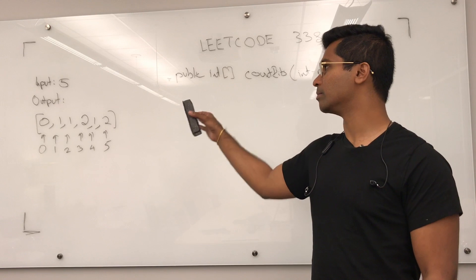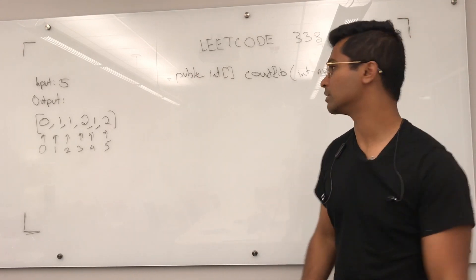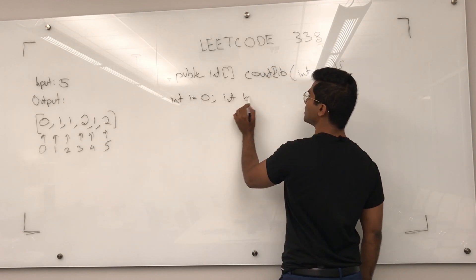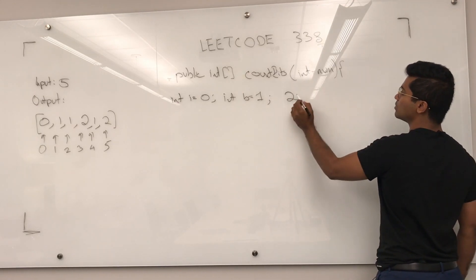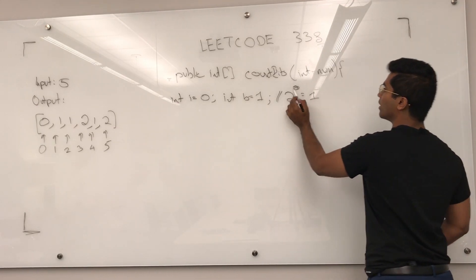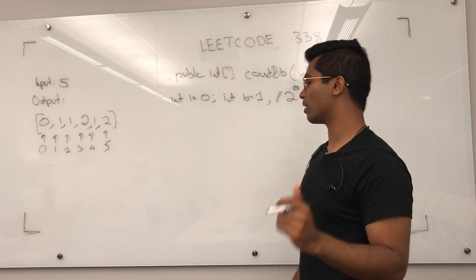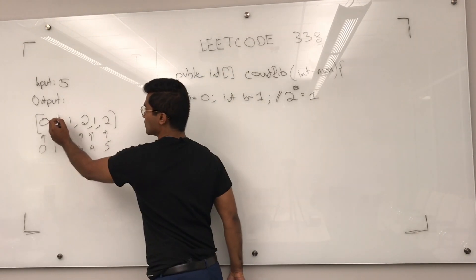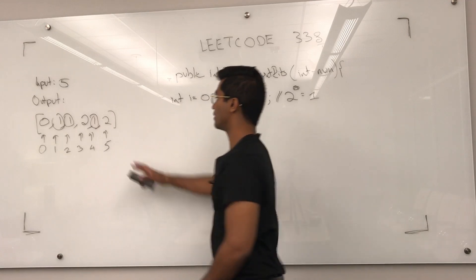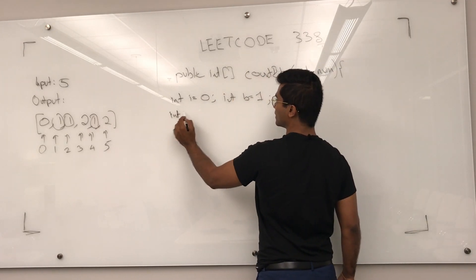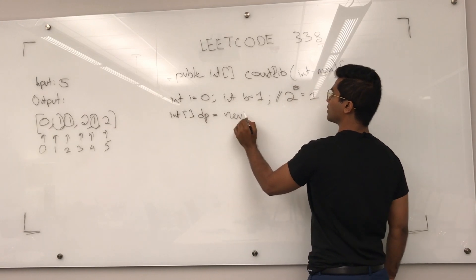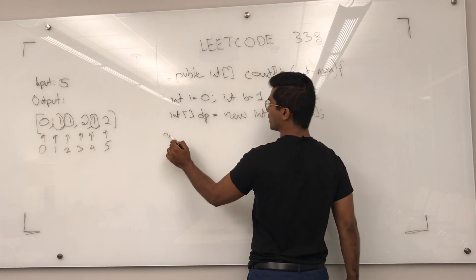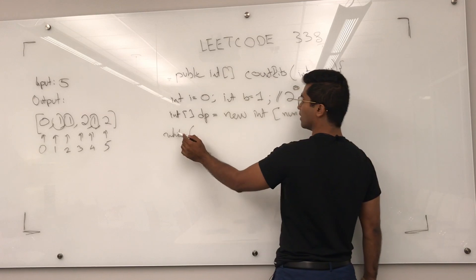I'm going to write the code and then pick a slightly bigger number so we see exactly how the array is getting filled. First, what we have to do is: int i is equal to 0 and int b is equal to 1. It's equal to 1 because 2 to the power of 0 is equal to 1, and this problem is based on powers of 2 — every time we hit a power of 2 we have one set bit. So we have to initialize the dp array to be num plus 1.